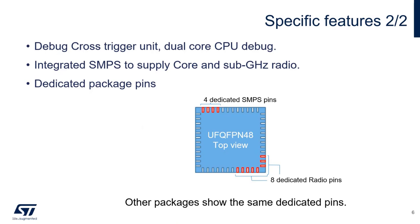We have an integrated switching mode power supply (SMPS) in order to increase the power supply efficiency and reduce current consumption in run mode. For SMPS, we have dedicated pins. Those pins are diagonal from the radio pins — this is important in terms of reducing the noise impact of SMPS, especially to the radio receiver. This applies to the QFP package, and the BGA package is also equipped with the same dedicated pins placed in the same safe zone from an EMC point of view.